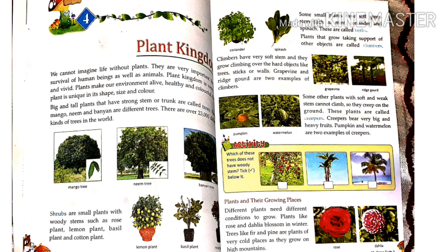Plants with soft green stems — such as mint, coriander, and spinach — are called herbs. These plants have very soft stems.